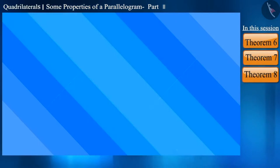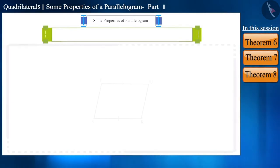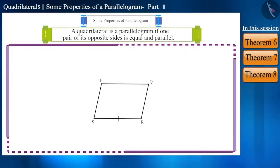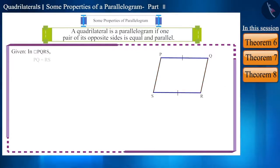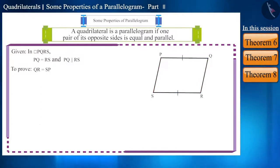Let's move to the last theorem. Try to prove this theorem with me: a quadrilateral is a parallelogram if a pair of its opposite sides is equal and parallel. Suppose we have quadrilateral PQRS in which PQ and RS are equal and parallel to each other. If we prove that sides QR and SP are also equal, then this quadrilateral will be a parallelogram, because if a pair of opposite sides of a quadrilateral is equal and parallel, then that quadrilateral is a parallelogram.